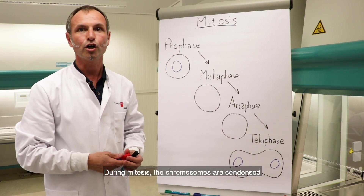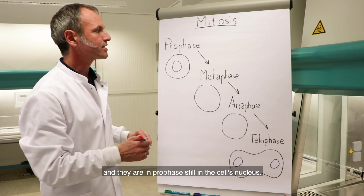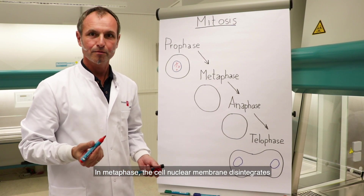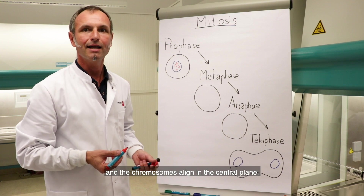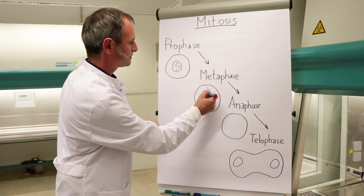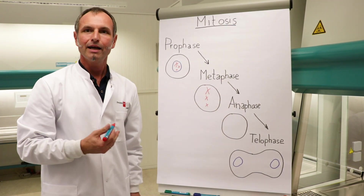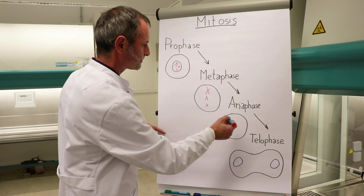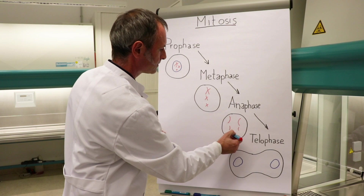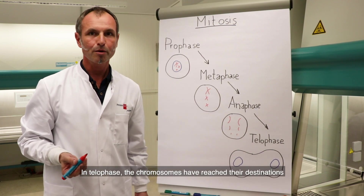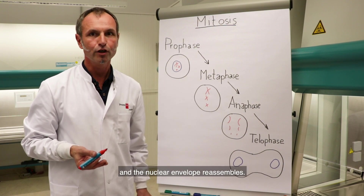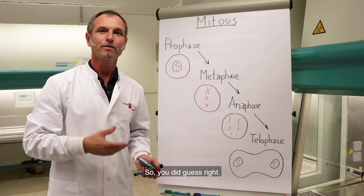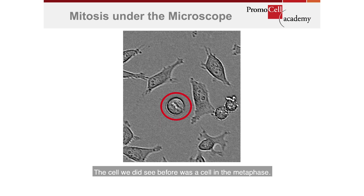During mitosis the chromosomes are condensed; in prophase they are still in the cell's nucleus. In metaphase the nuclear membrane disintegrates and the chromosomes align in the central plane. In anaphase the chromatids of the individual chromosomes separate to opposite sides of the cell. In telophase the chromosomes reach their destinations and the nuclear envelope reassembles. The cell we saw before was a metaphase cell.